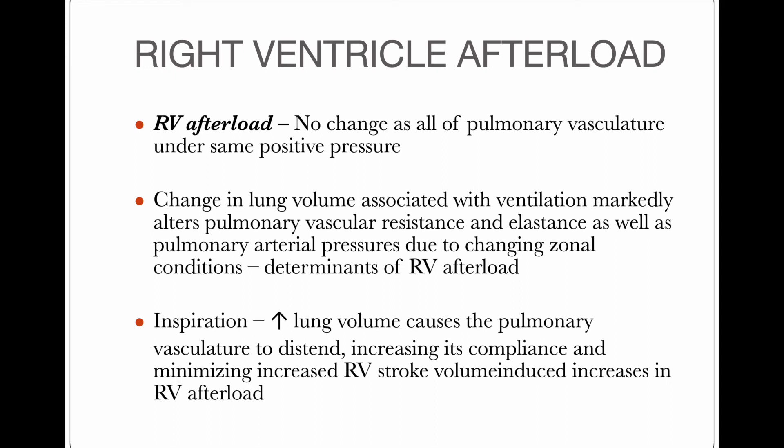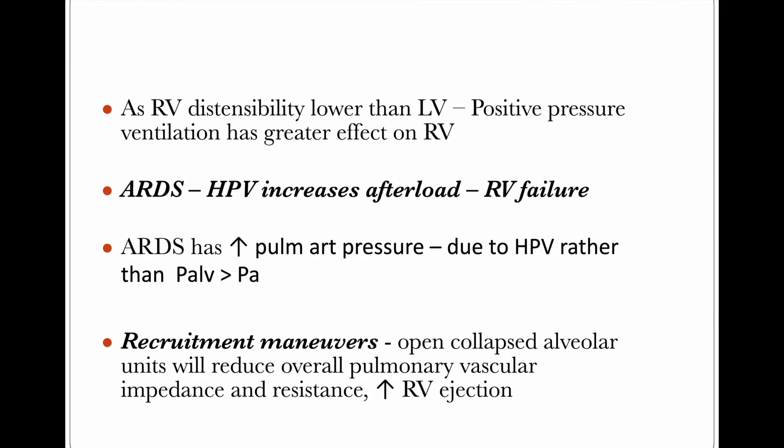During inspiration, increased lung volume causes increased pulmonary vasculature distension, increasing compliance and minimizing the RV afterload increase induced by increased RV stroke volume. Since RV distensibility is lower than the left ventricle, positive pressure ventilation has a greater effect on the right ventricle. The left ventricle has more distensibility and can adapt. The RV has a fixed lower volume of 140-160 ml, so positive pressure ventilation affects RV more than the left ventricle.